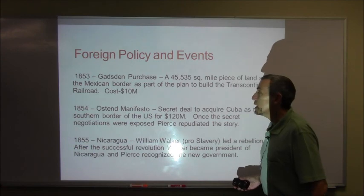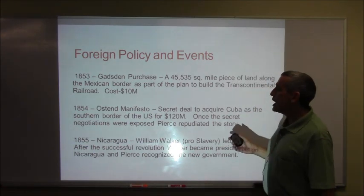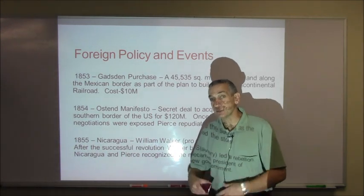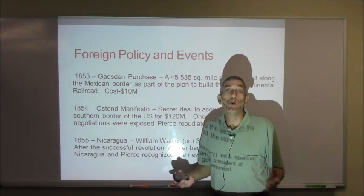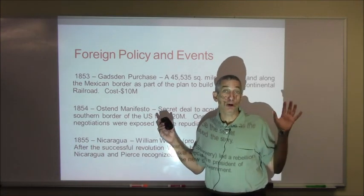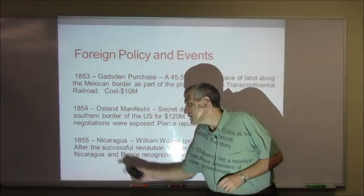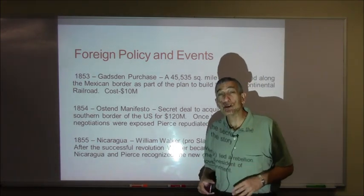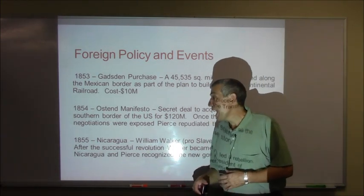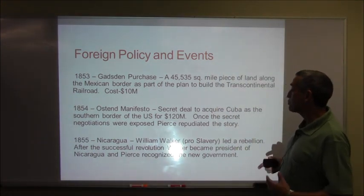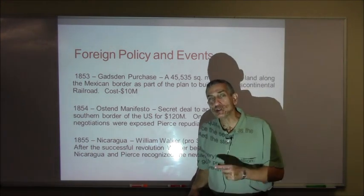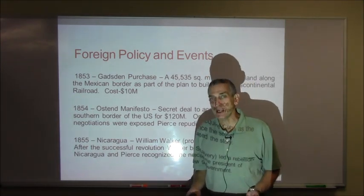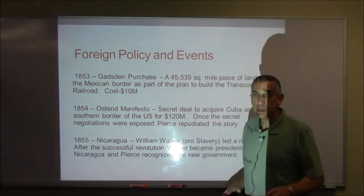With the Ostend Manifesto in 1854, the idea was that we might want to acquire Cuba and add it to the United States — it was secret negotiations. Once the negotiations were found out about, Franklin Pierce backed up and said, we're not doing that. Then in 1855, we have Nicaragua. William Walker, a pro-slavery guy, goes down to Nicaragua, ferments a whole rebellion, and becomes president of Nicaragua. Franklin Pierce turns around and recognizes him as president of Nicaragua, thereby substantiating his right to the office — which angered an awful lot of people.